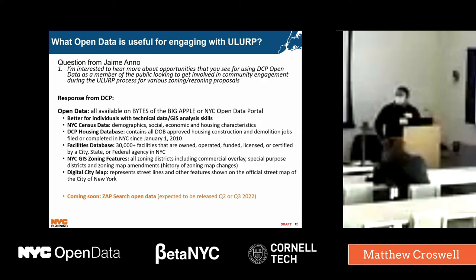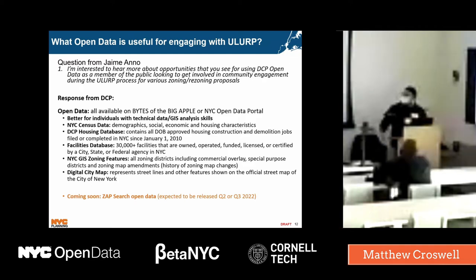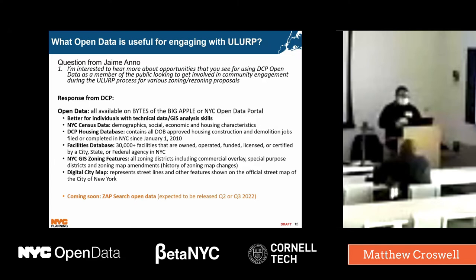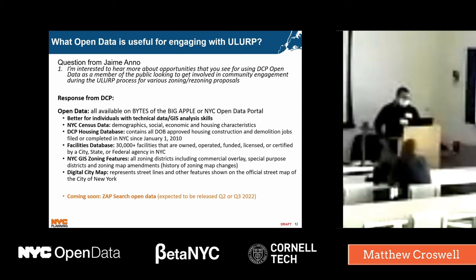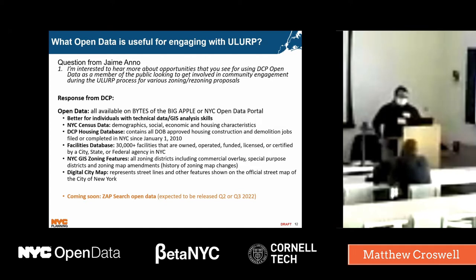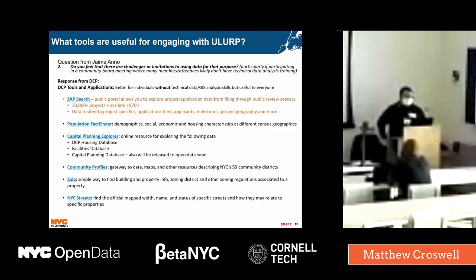The ECB housing database is one of our newest data sets — it contains all DOB-approved housing construction and demolition jobs since 2010, and does a lot of the data cleaning that makes DOB data less confusing. The facilities database covers the 30,000 facilities licensed by one of the government agencies in New York City — some ULURP processes are about siting facilities, so that's useful. Then of course the zoning features and digital city map data. Coming soon is something called ZAP Search open data — expected in the next quarter or so.